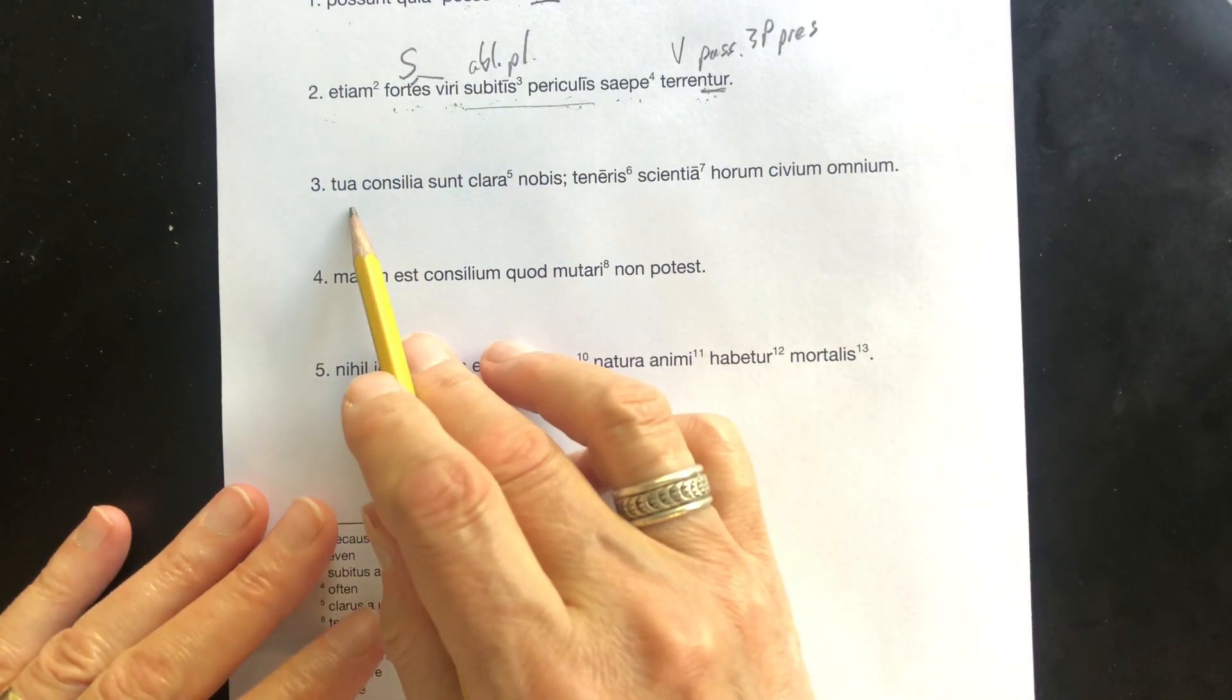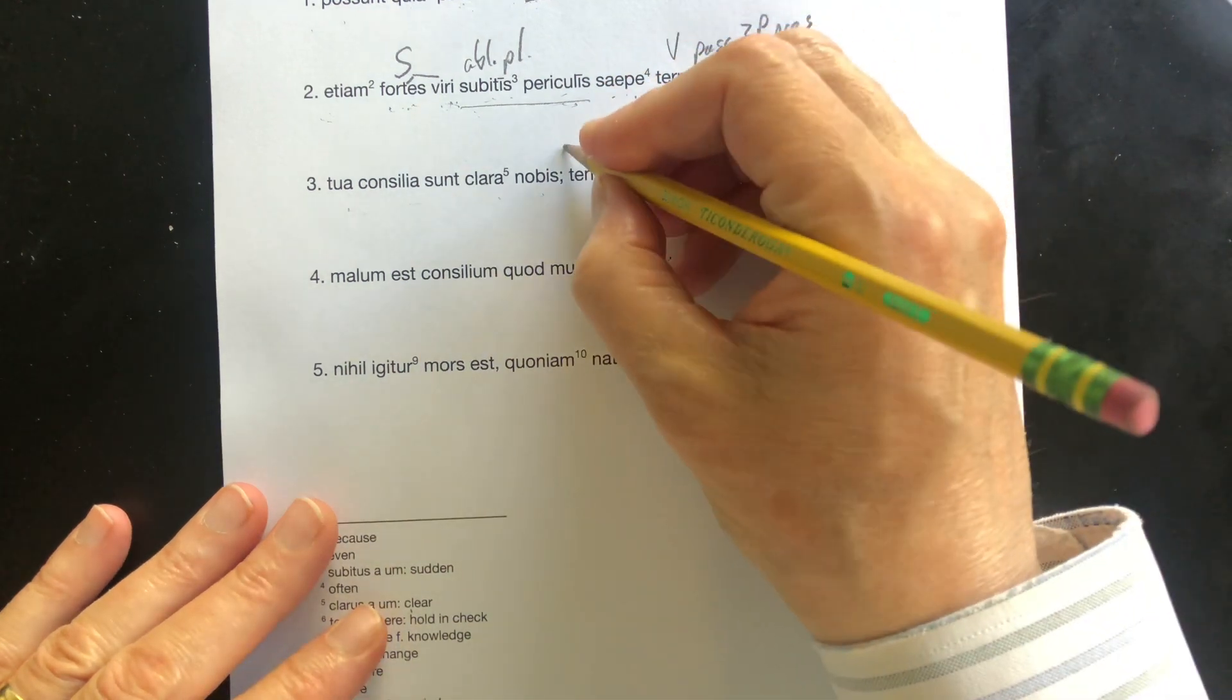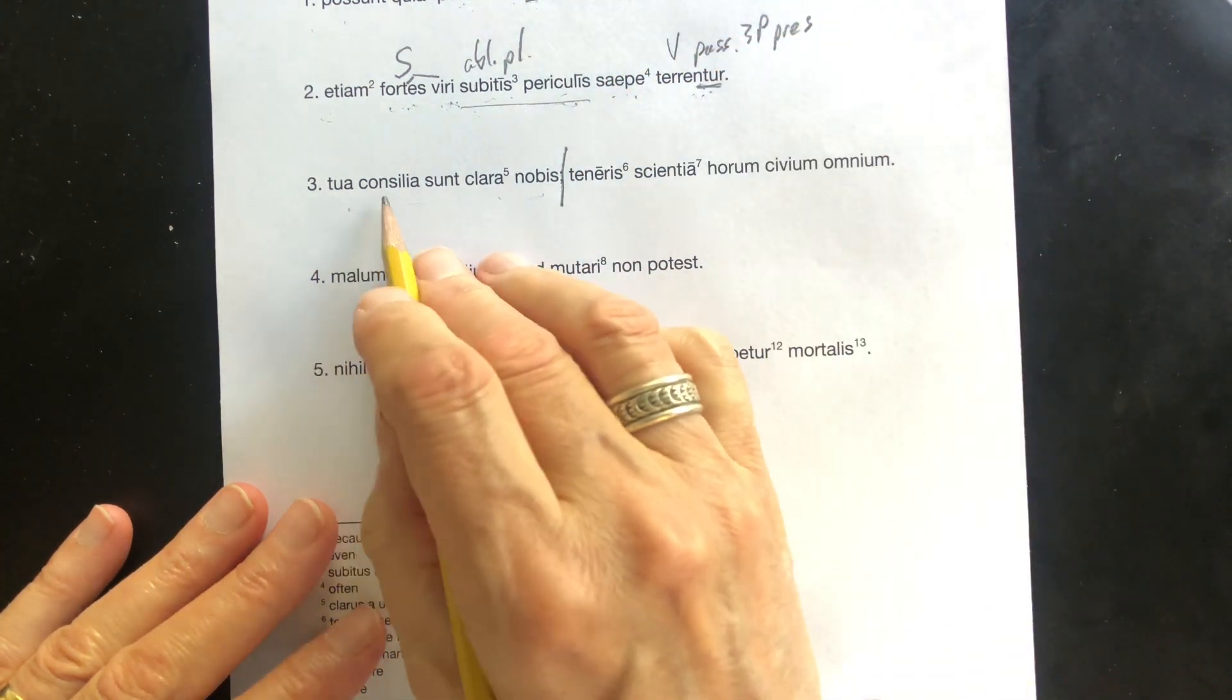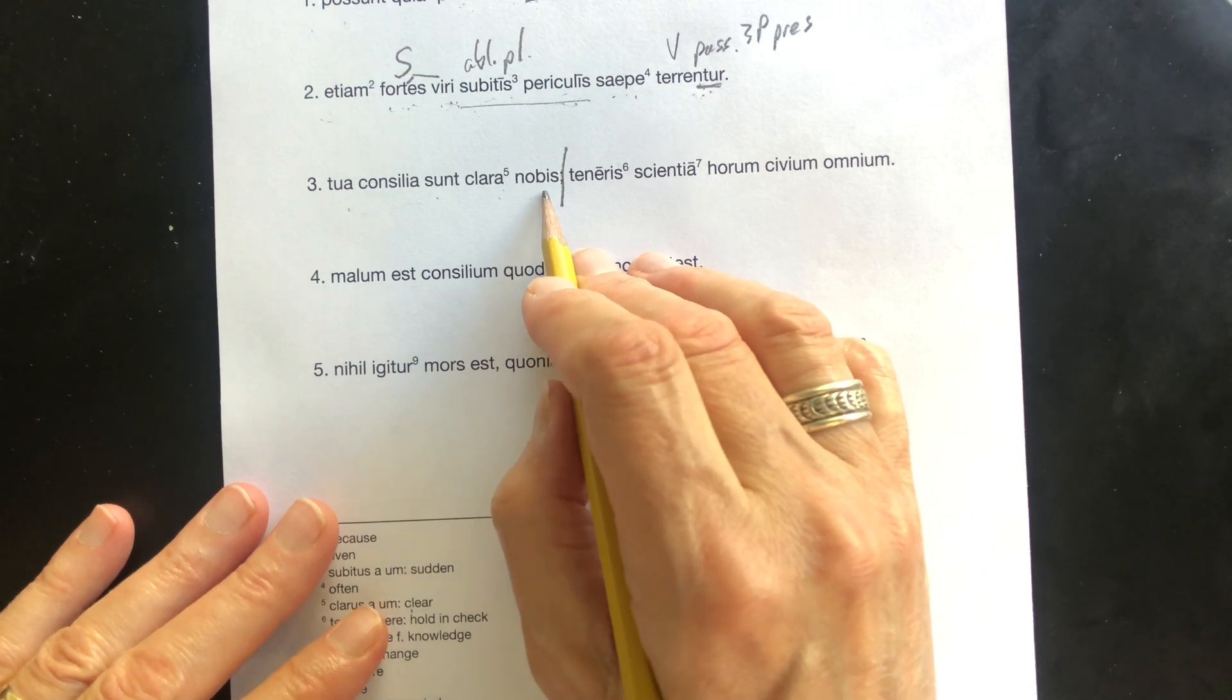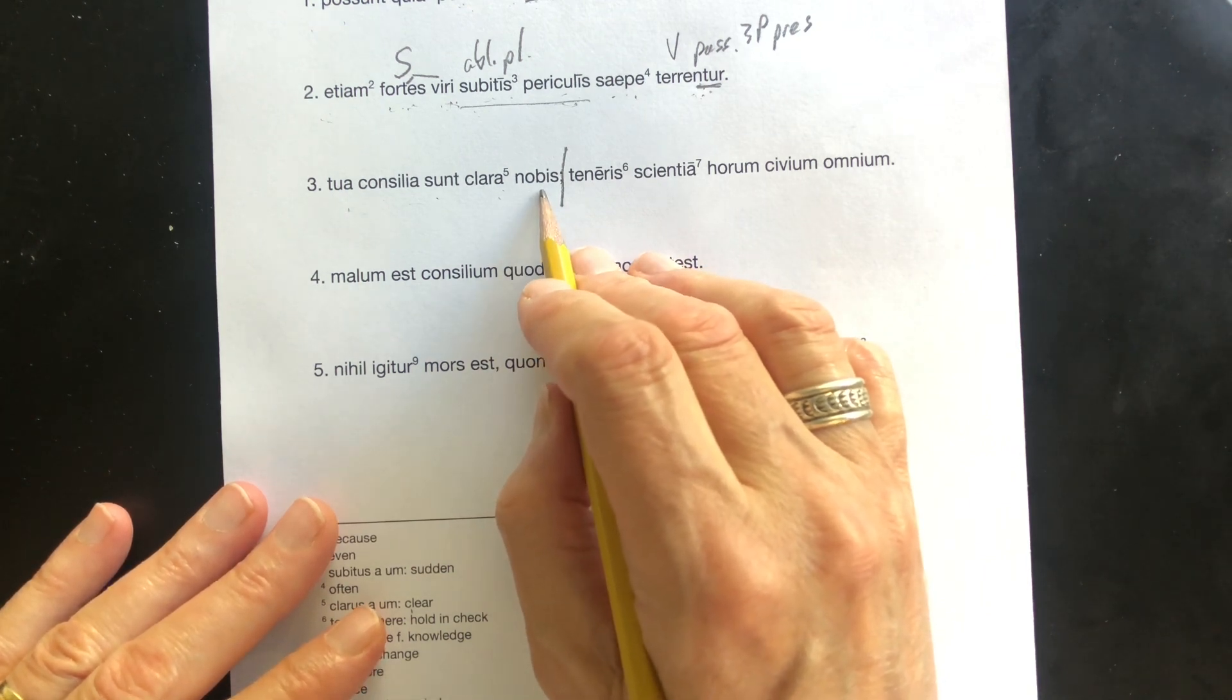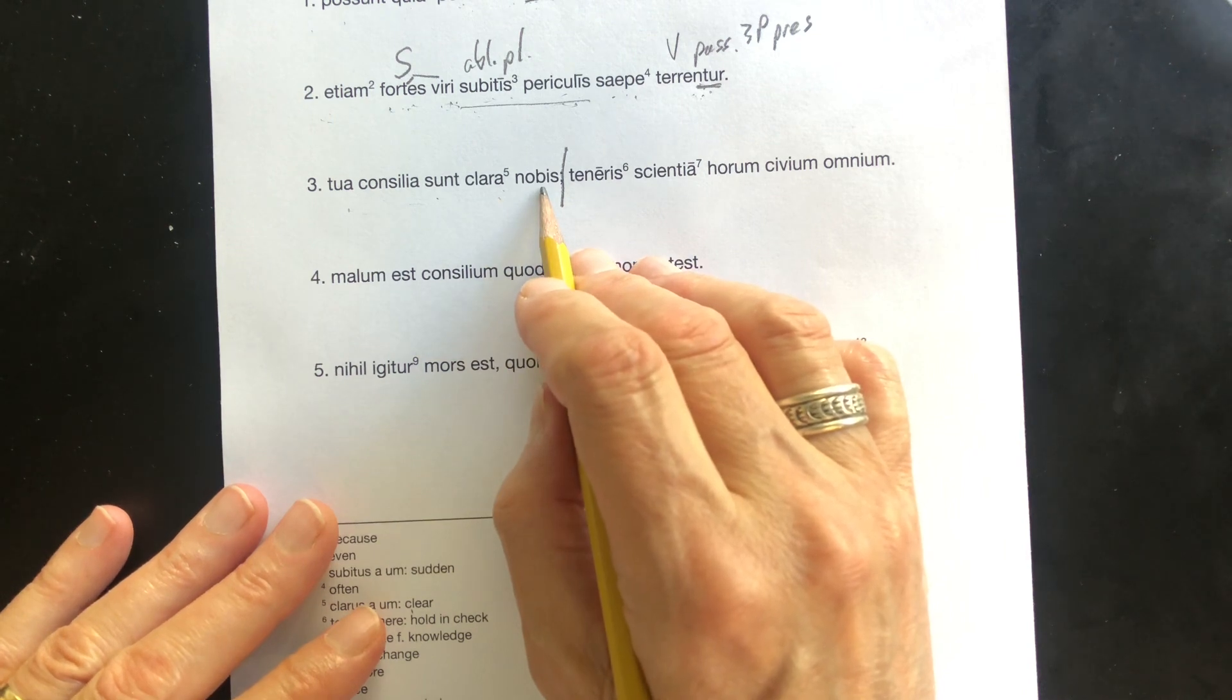Three. Tua concilia sunt clara nobis. All right, let's stop right there because we have a semicolon. Your plans are clear. And nobis, you've got a choice of dative or ablative there. I'm going to go with the dative: to us. That makes sense, not by us.